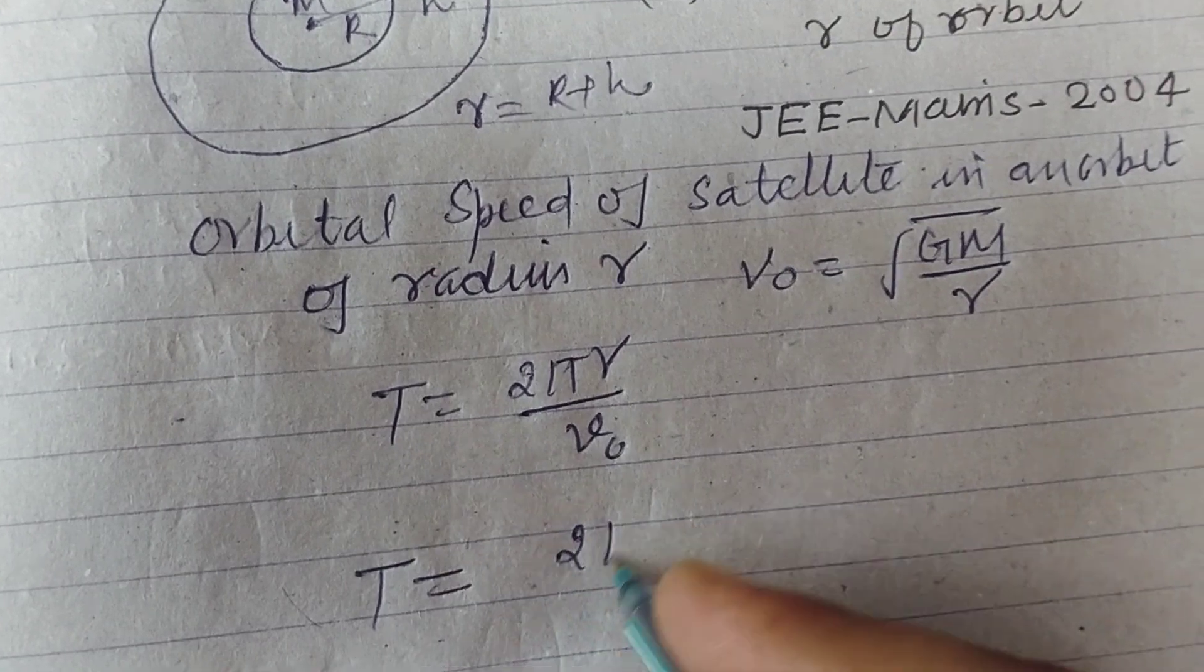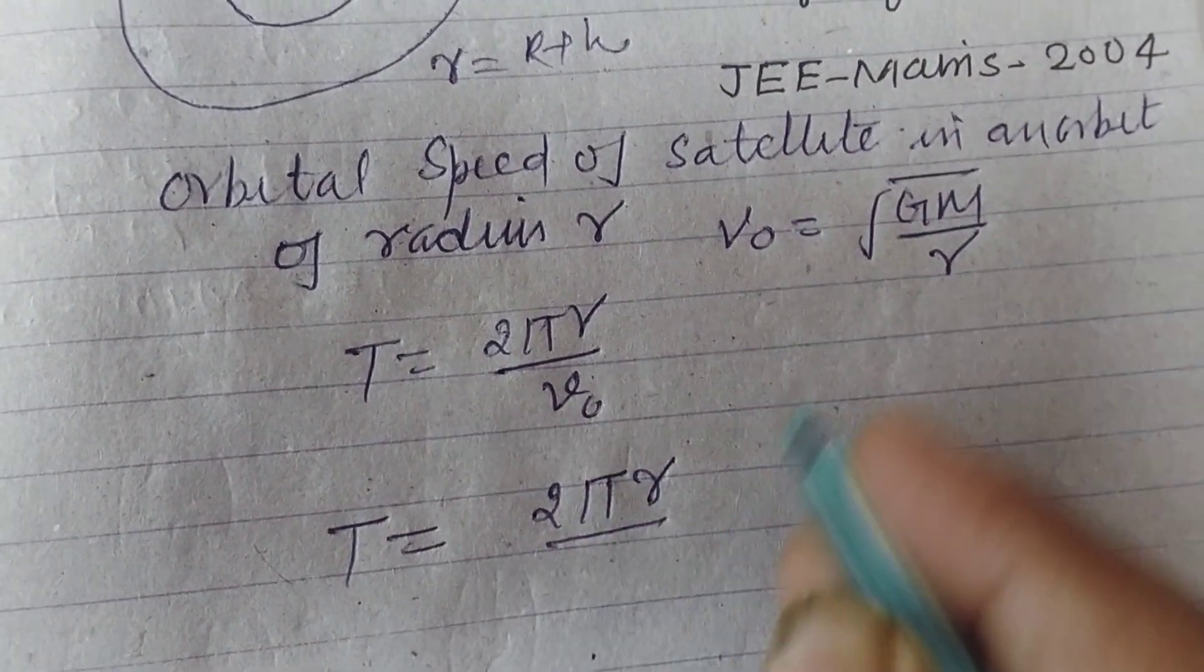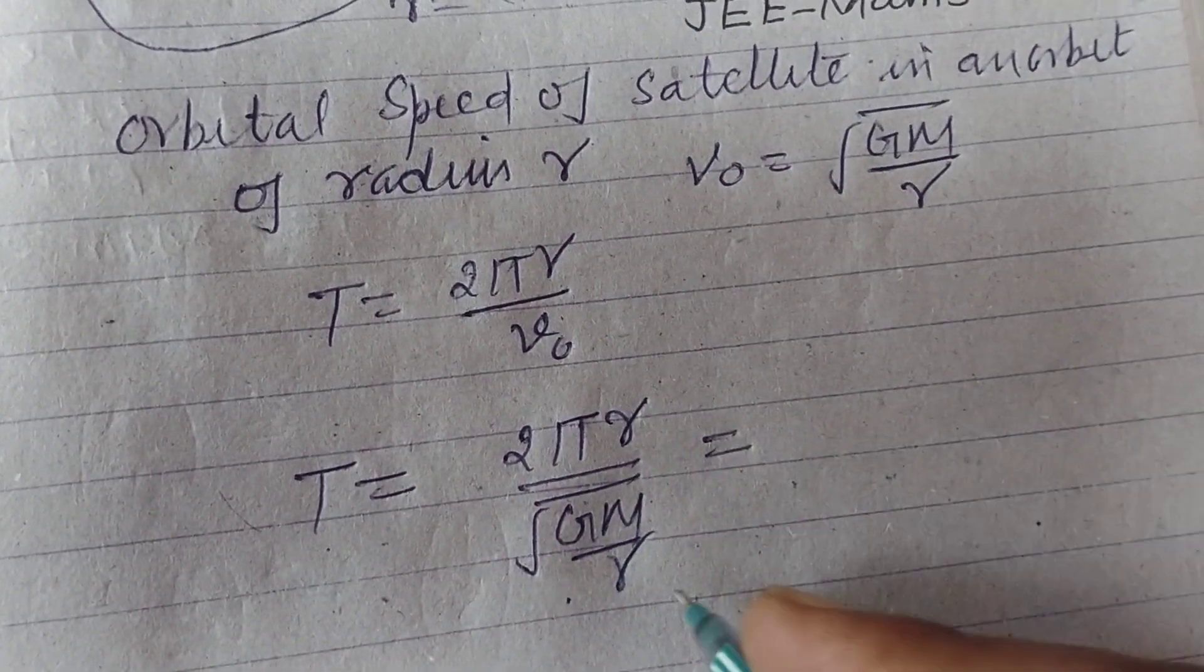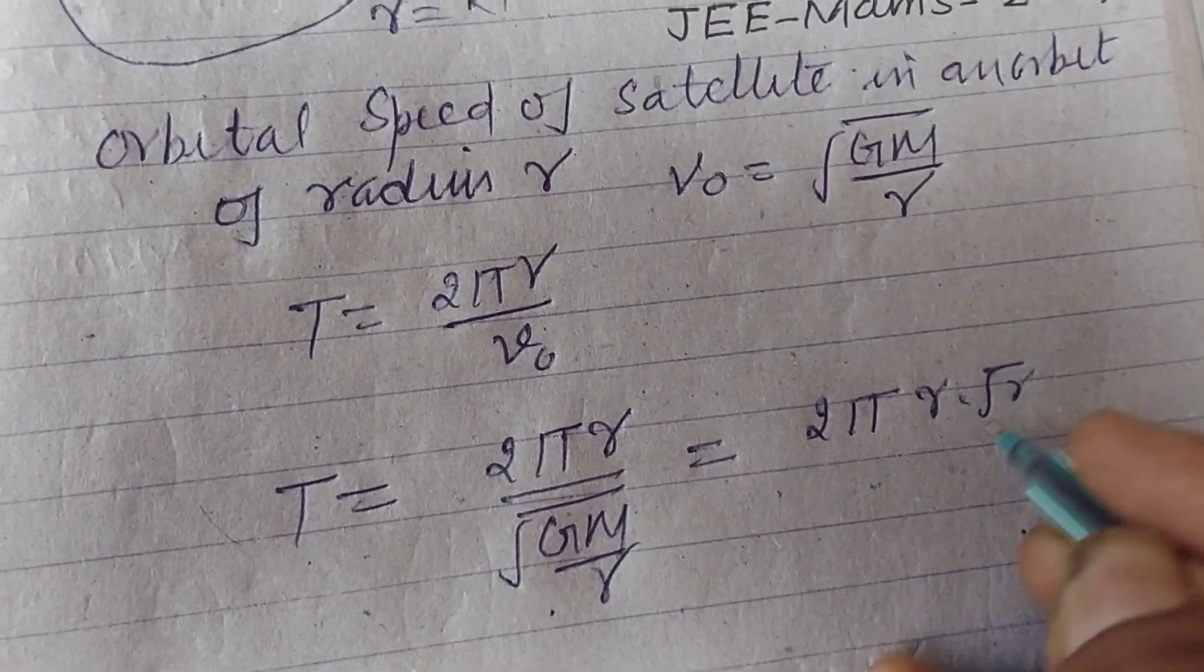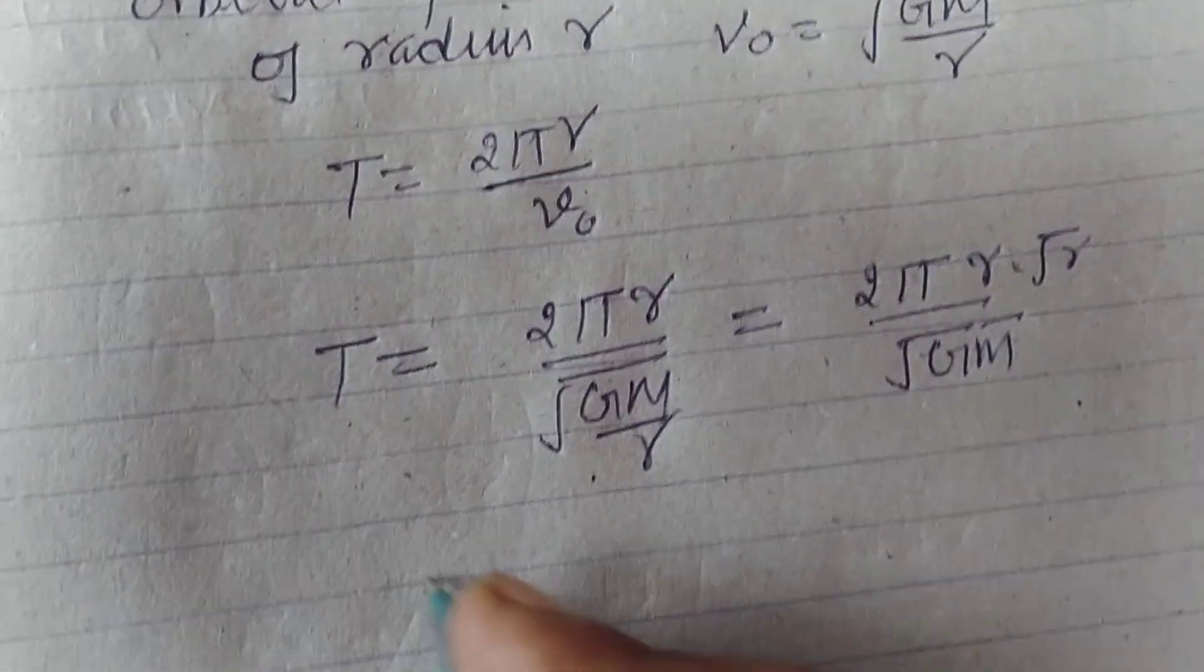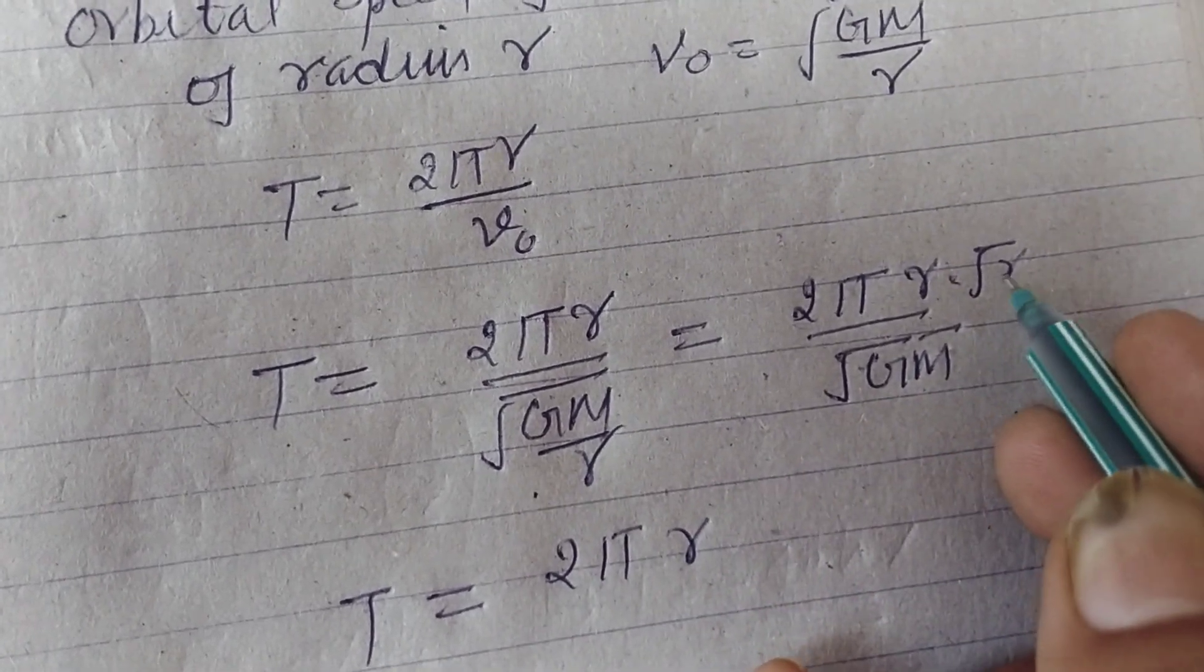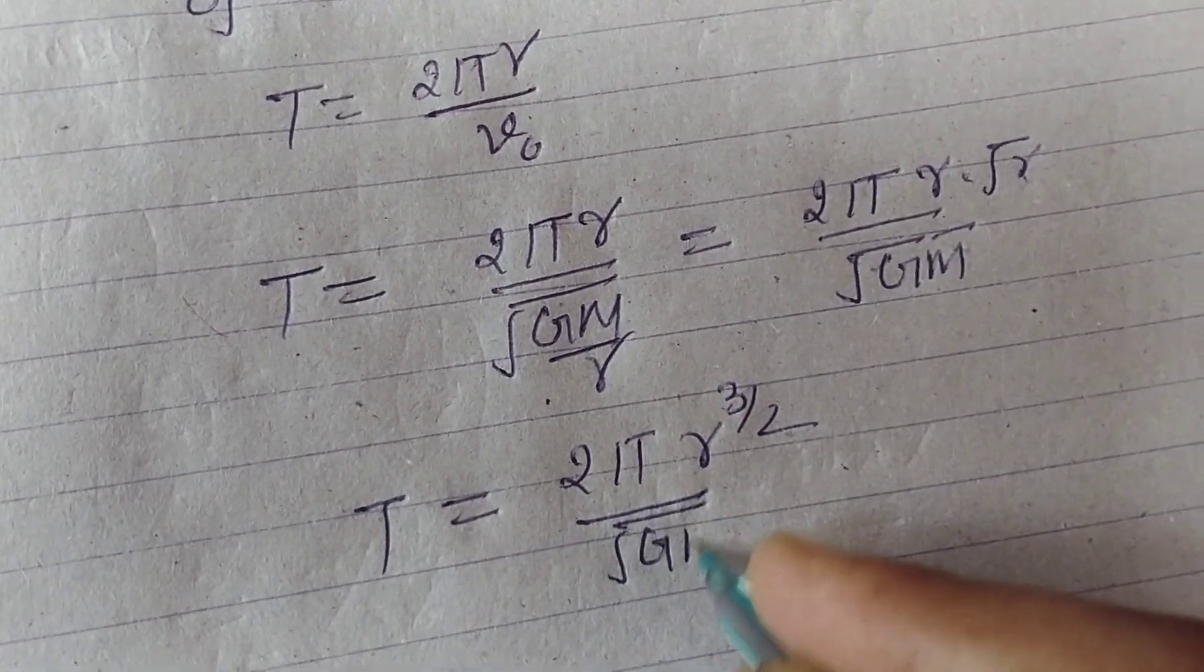So T equals 2πr upon square root GM upon r. And this will be 2πr into square root r upon square root GM. And T equals 2π r to the power 3/2 upon square root GM.